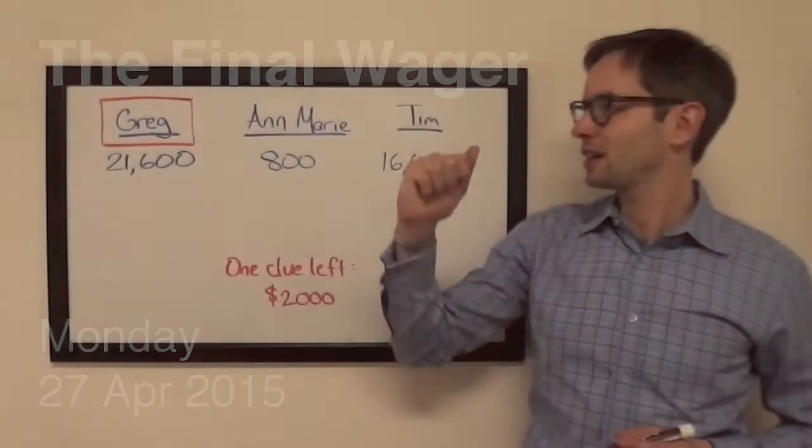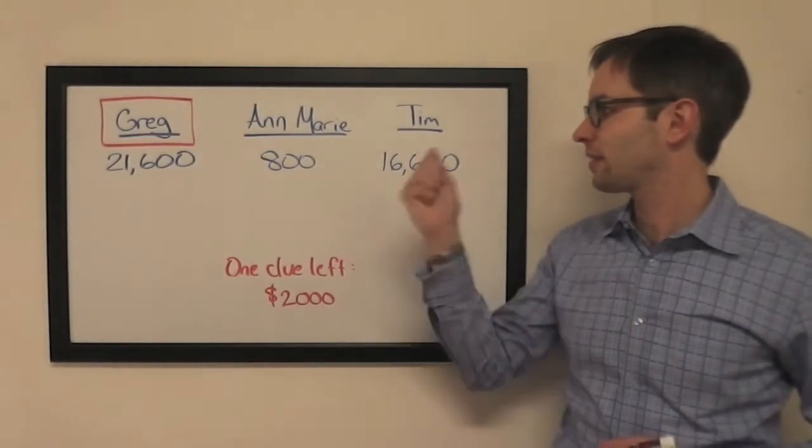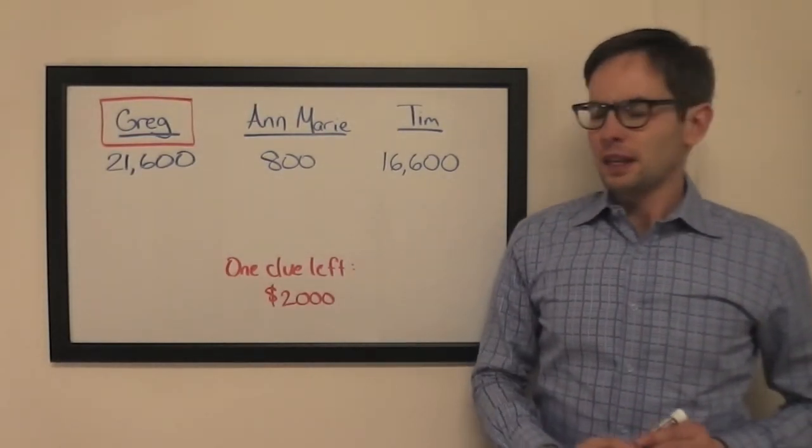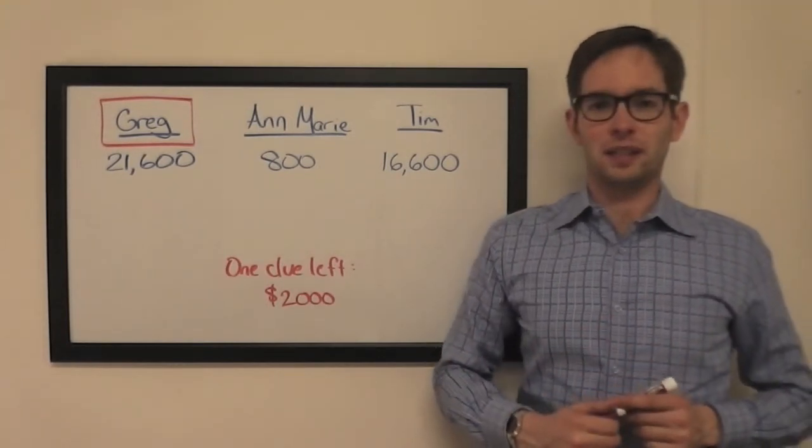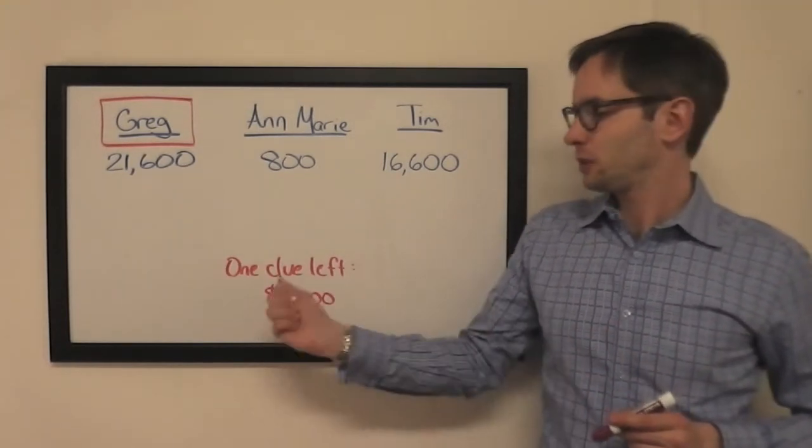Belongs to our champ Greg, who is in his third game. He's got a $5,000 lead over Tim. What does he do with this $1,600 daily double? There's a $2,000 clue left.